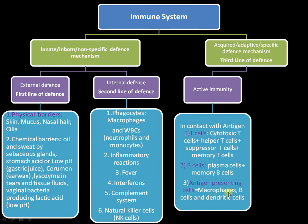A third group of cells called antigen presenting cells are also involved in active immunity. These cells, which are part of the second line of defense, present pathogens to T helper cells or B-cells so that a specific immune response is generated — secreting numerous antibodies into the bloodstream. This forms the basis of active immunity.